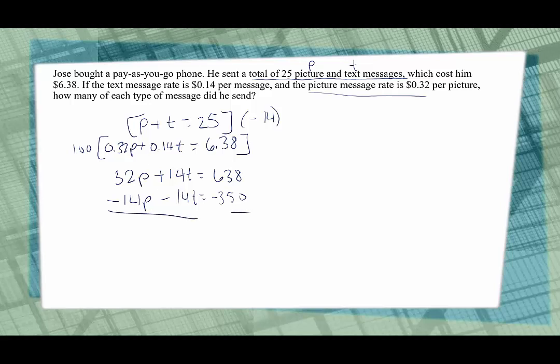Then let's see, those eliminate. 32P minus 14P is 18P. 638 minus 350 is going to be 288. And then to get P by itself we'll divide both sides by 18, and we figure out that he sent a total of 16 picture messages.